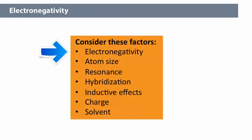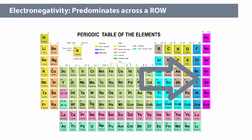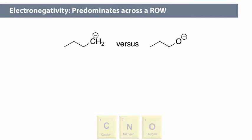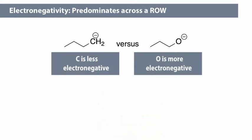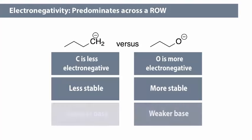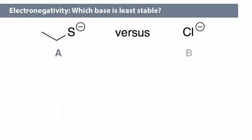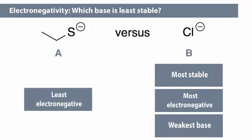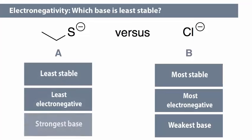Let's look at how electronegativity affects the relative stability of two species. This factor predominates when comparing atoms across a row in the periodic table. We can compare the basic carbon versus oxygen atoms in this example. Because the oxygen atom is more electronegative than the carbon atom, it can better hold or stabilize the negative charge. That makes oxygen more stable with a negative charge than the carbon atom, and makes O- a weaker or more stable base. Chloride is the most stable base because it is the most electronegative atom and can best stabilize the negative charge. The thiolate, being the least electronegative, is least able to stabilize the negative charge and is the strongest base of this pair.